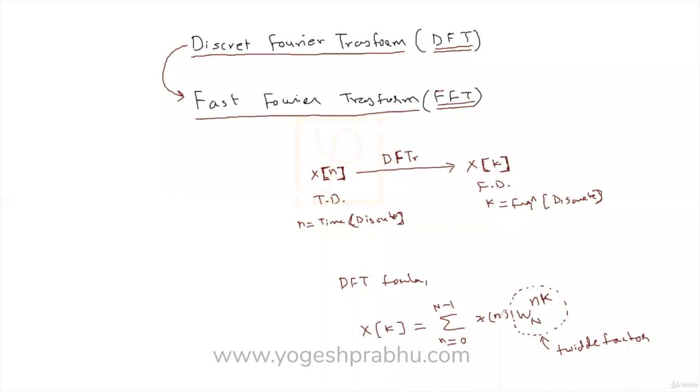Twiddle factor. And about this, when you write W N raise to NK, when you write W N raise to NK, it is W N raise to 1 raise to NK, where this W N raise to 1 is E raise to minus J 2 pi by N. Now this is something you to remember.